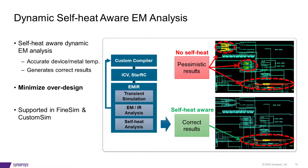For advanced node IP, minimizing over-design is critical. Dynamic EMIR is the only viable solution to ensure sign-off quality analysis. We have worked closely with foundries to support the latest EM effects, including FinFET self-heating. Our solution for EMIR analysis is supported in CustomSim with accuracy closely correlated to HSPICE and capacity performance suitable for IP-level design. CustomSim EMIR analysis is well integrated in the Custom Compiler environment, helping to quickly browse and filter violations, as well as pinpoint EM and IR drop issues in layout.